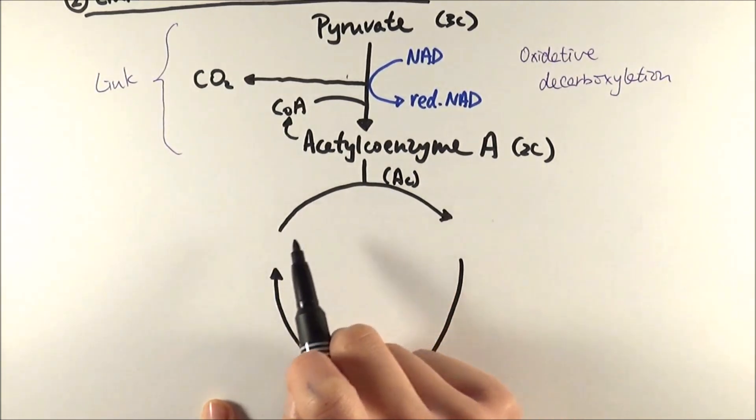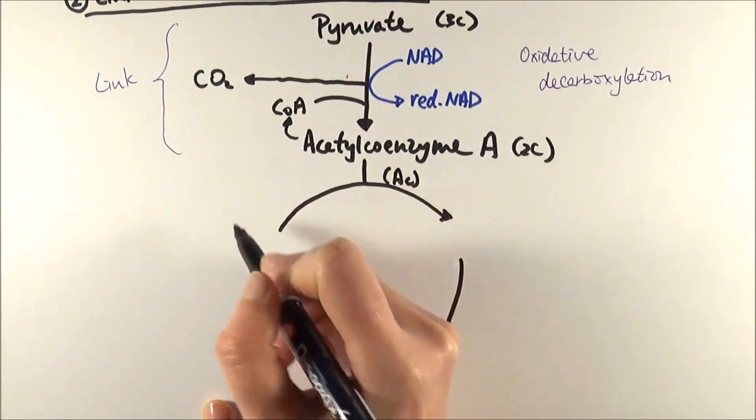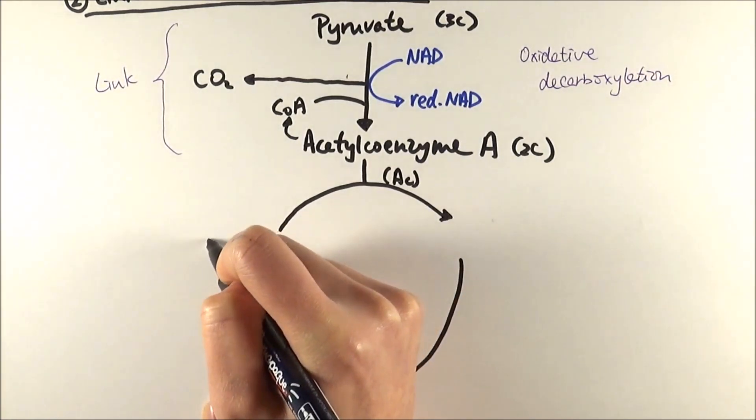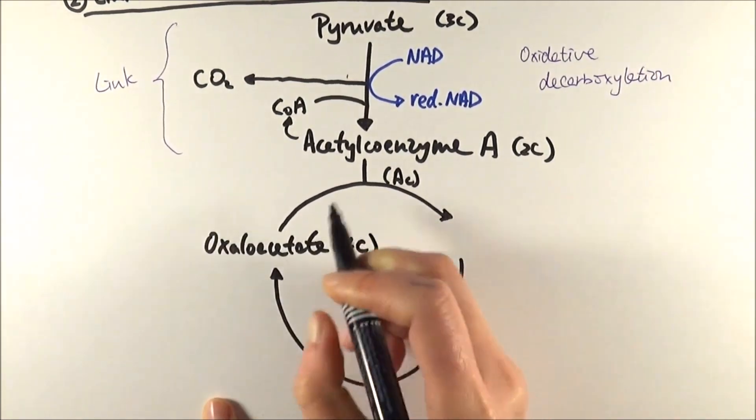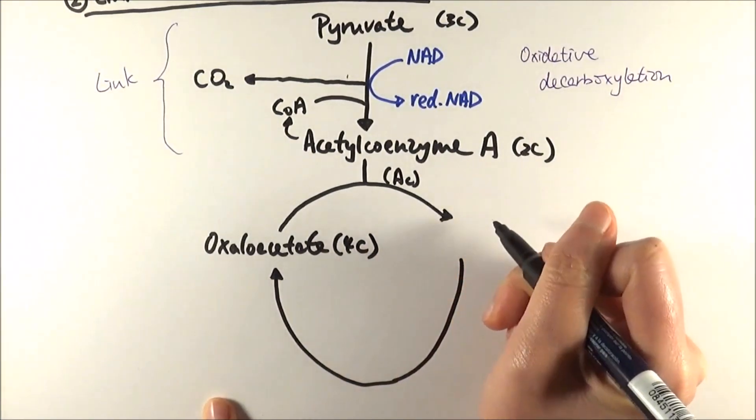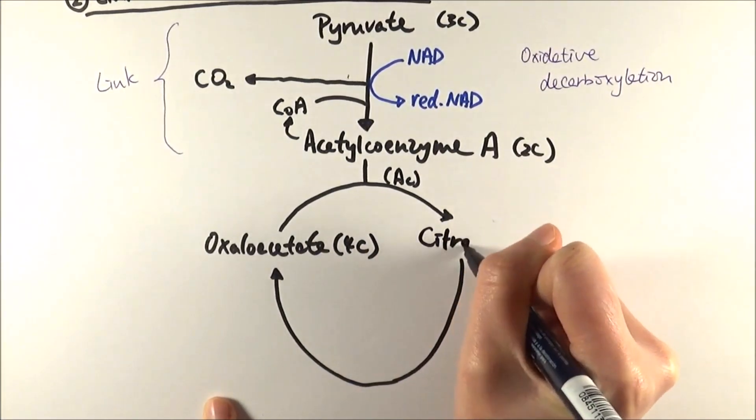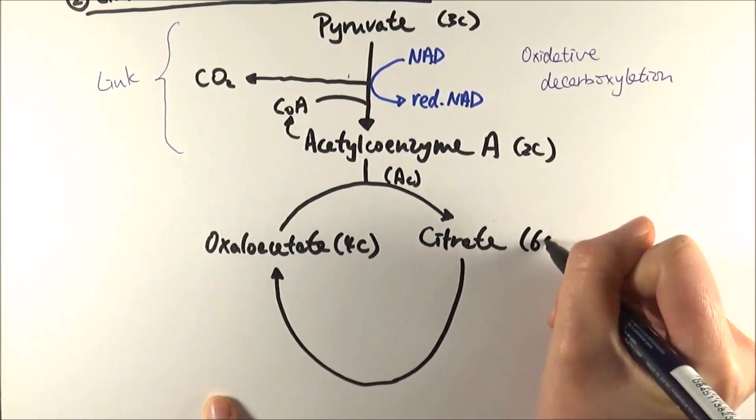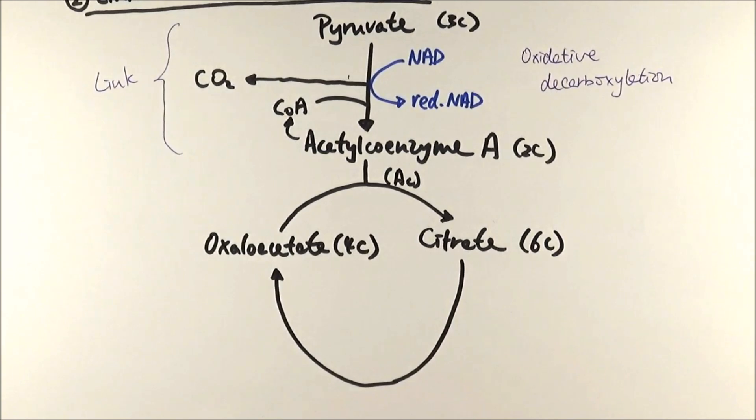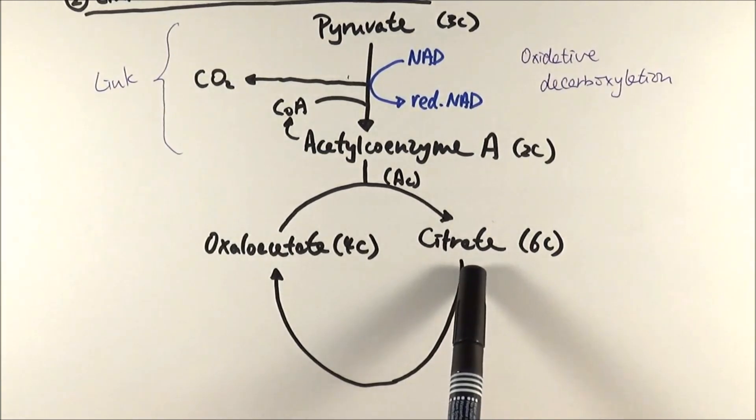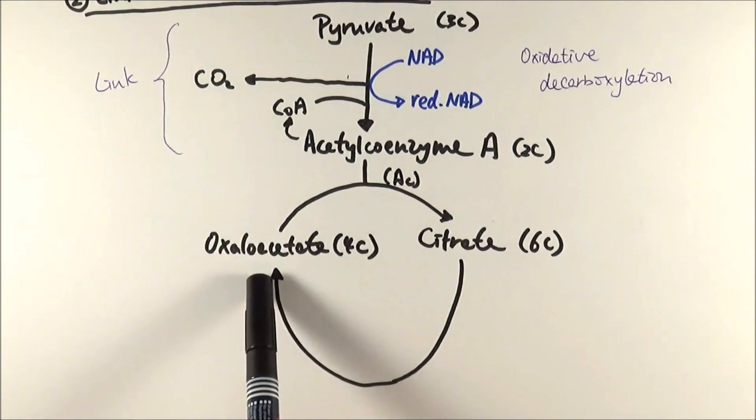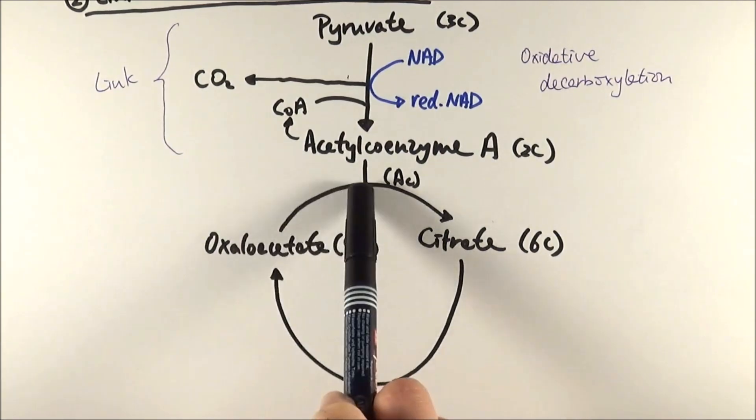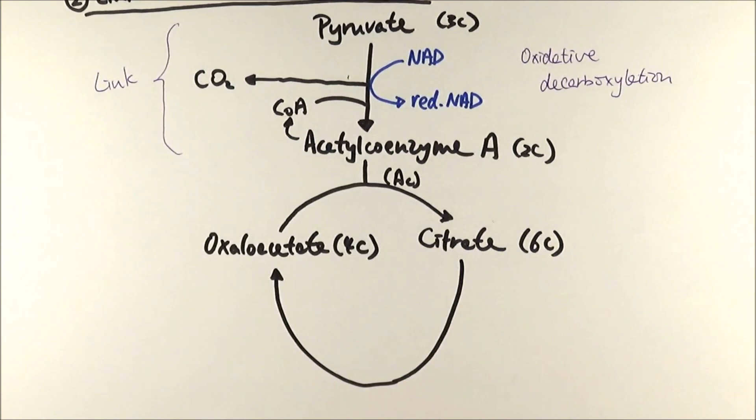What happens here is that the acetyl group is a two carbon molecule and it joins with something called oxaloacetate, which is a four carbon molecule. When they combine they make a six carbon molecule, which is what we call citrate. You may have heard of citric acid - it's the same thing. In this process, citrate undergoes multiple steps to regenerate oxaloacetate.